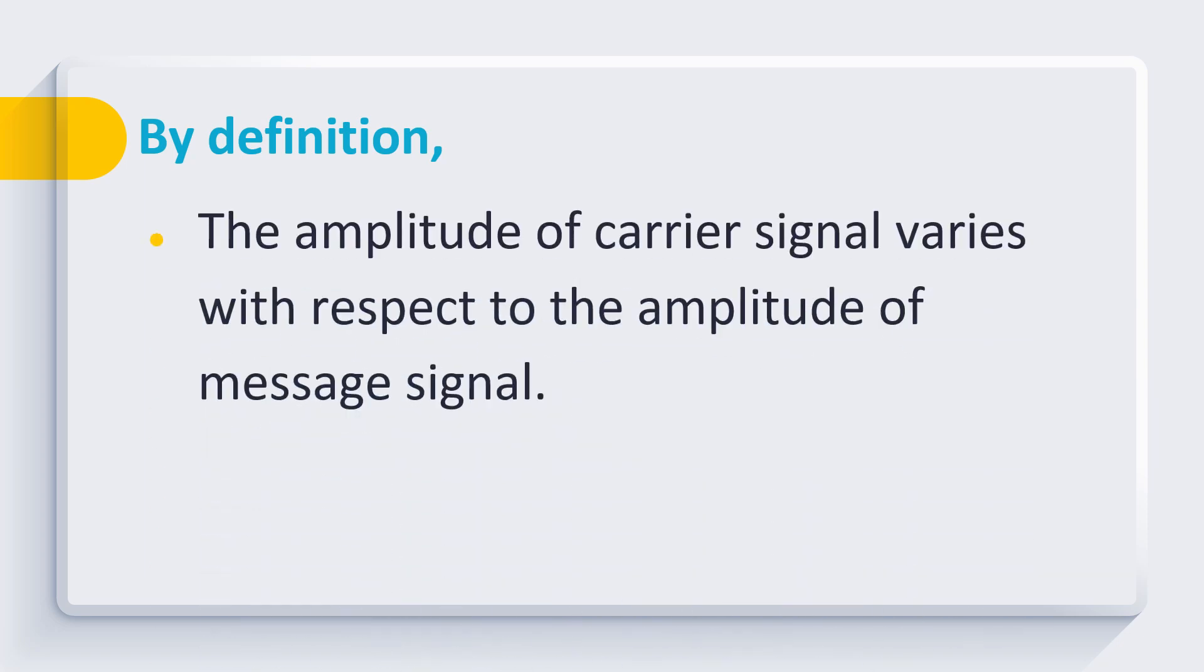But by definition, the amplitude of carrier signal varies with respect to the amplitude of message signal. Let's try to understand this. For example, we have input signal m(t) that goes to our multiplier together with our carrier signal c(t), which is equal to cos ωt.